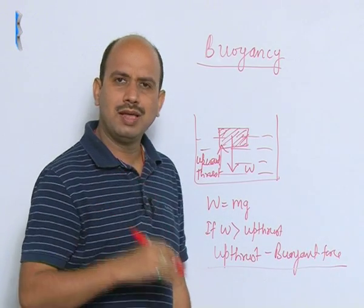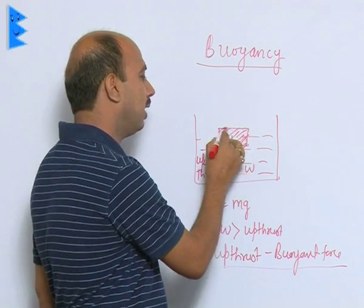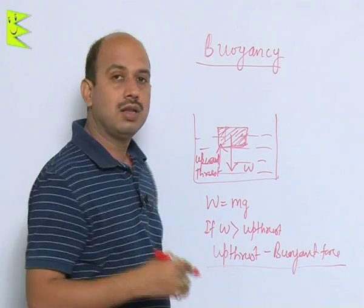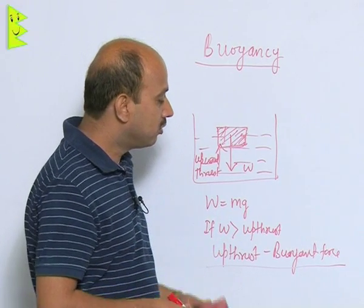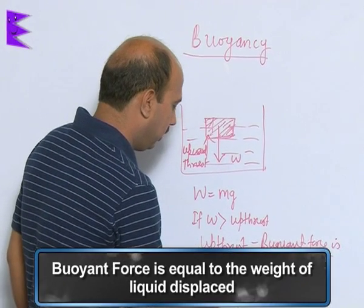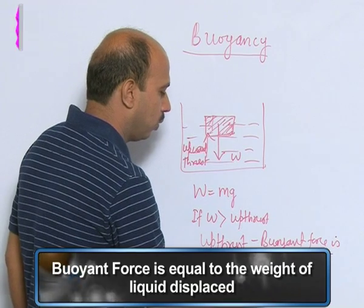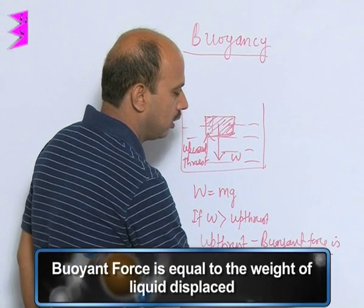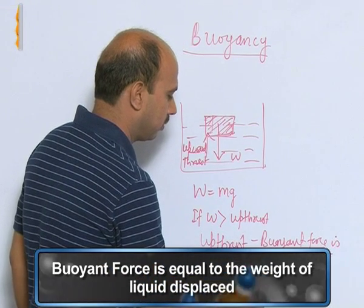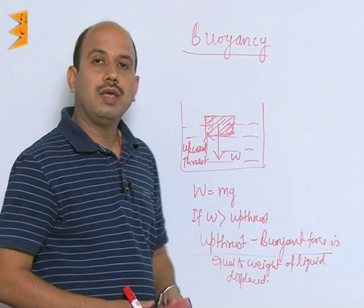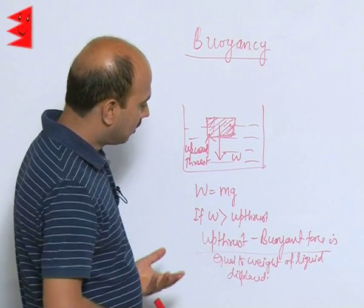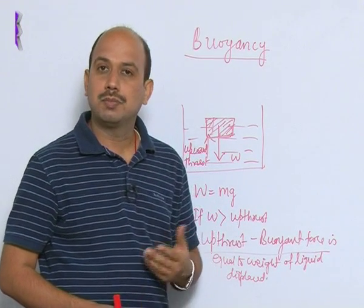As we discussed about densities, if the density of a body is larger than the density of water it will sink; if it is less, it will float. The buoyant force is equal to the weight of the liquid displaced. If you calculate the weight of the liquid displaced, you can calculate the buoyant force. Now we will discuss Archimedes' principle.